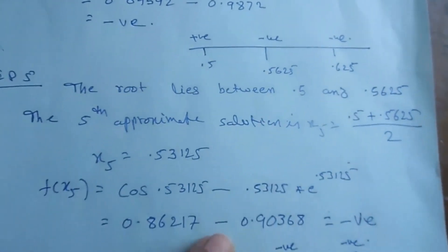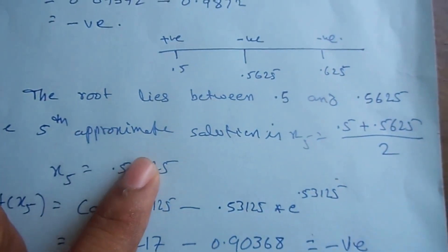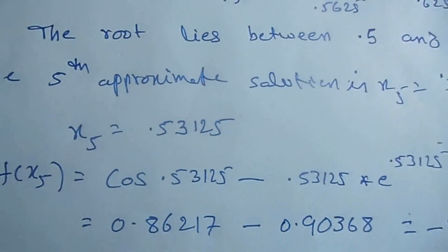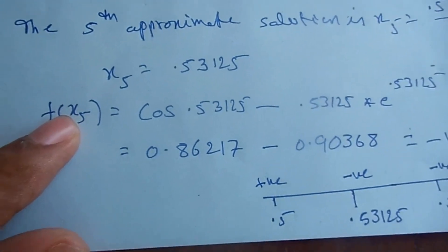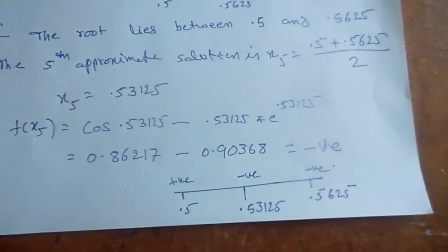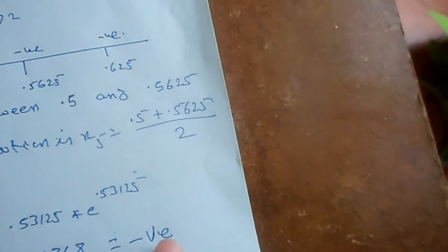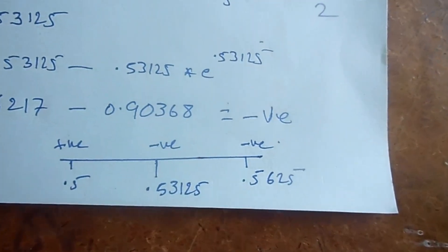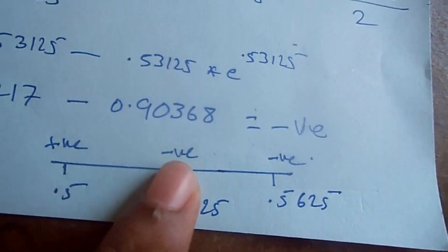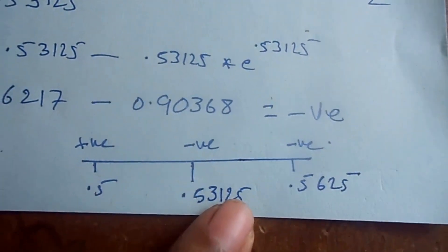Step 5: the root lies between 0.5 and 0.5625. The fifth approximate solution is x5 = (0.5 + 0.5625) / 2 = 0.53125. f(x5) = cos(0.53125) minus 0.53125·e^0.53125, which is again a negative value — approximately 0.86 minus 0.90, which is negative. At x=0.5 it is positive, at x=0.5625 it is negative, and at the midpoint it is negative. So the next root lies between 0.5 and 0.53125.